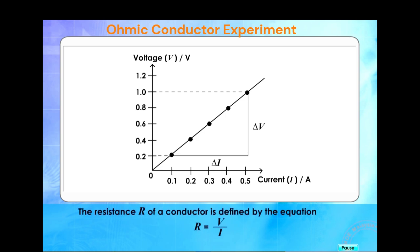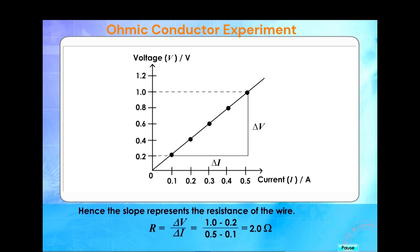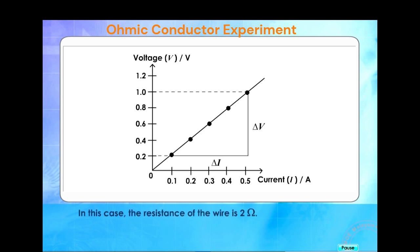The slope of the graph equals delta V over delta I equals constant value. The resistance R of a conductor is defined by the equation R equals V over I. Hence the slope represents the resistance R equals delta V over delta I equals 2.0 Ohm. In this case, the resistance of the wire is 2 Ohm.